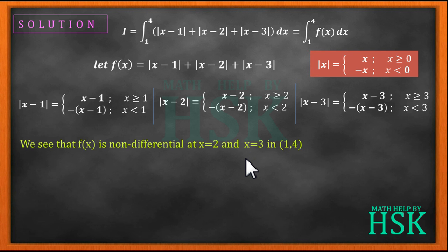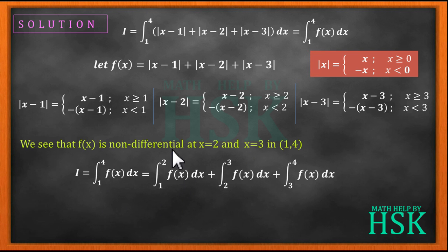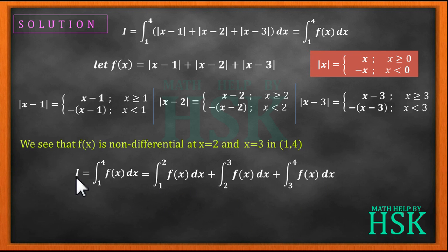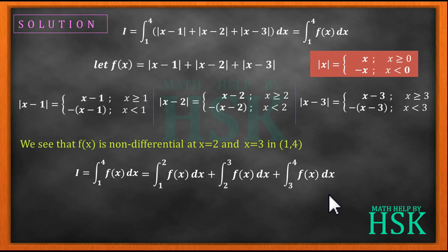When we have a function which is non-differentiable at a point, we divide the definite integral into the sum of two or more definite integrals. So we can write the integral of f(x) dx from 1 to 4 as equal to the integral from 1 to 2 plus the integral from 2 to 3 plus the integral from 3 to 4. By doing this, there is no point of non-differentiability within any of the sub-intervals, so we can perform the integration.